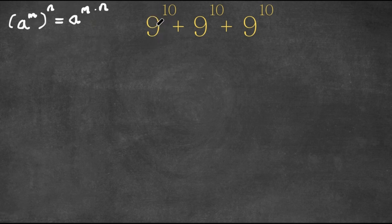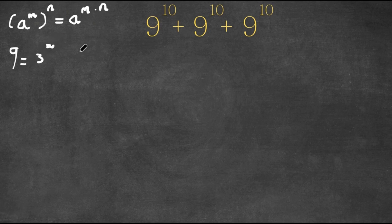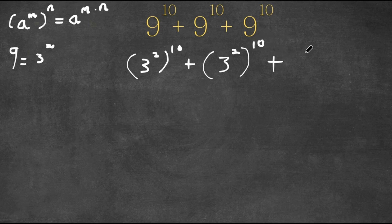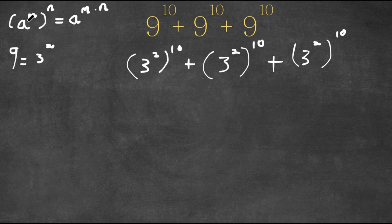So right here we have 9, and 9 is equal to 3 squared. So I'm going to replace all our 9s with 3 squared. So we have 3 squared to the power of 10, plus 3 squared to the power of 10, plus 3 squared to the power of 10. All three terms are in the form a to the power of m to the power of n, which equals a to the power of m times n. So each term becomes 3 to the power of 2 times 10.